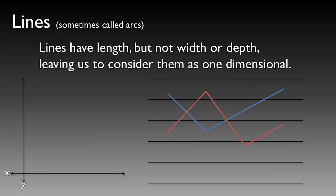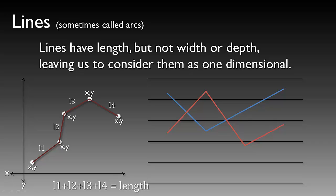Lines, on the other hand, are sometimes called arcs or vectors. They have length, but they generally don't have a width or depth, so we consider them one-dimensional. A line is really a series of XY points connected by a series of vectors.